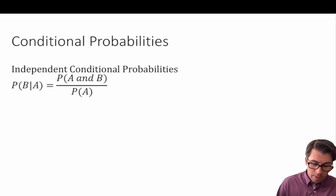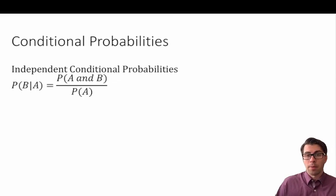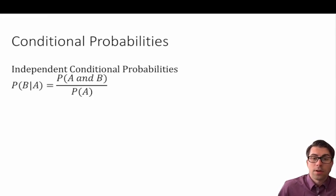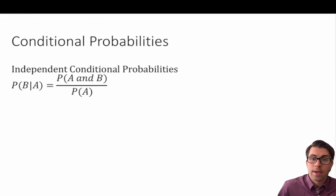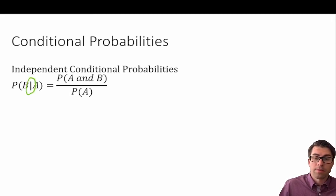So here's our equation for conditional probabilities. We read this as the probability of B given A is equal to the probability of A and B divided by the probability of A. In other words, we can read this as the probability of event B given some piece of information of event A is equal to the probability of event A and B occurring together — that's the joint probability — divided by the probability of event A, which is the marginal probability.